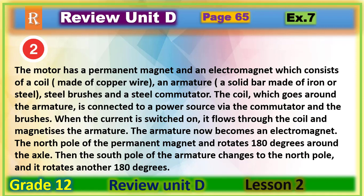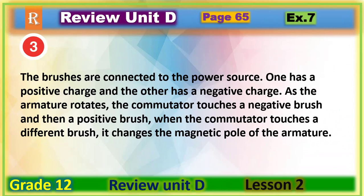The north pole of the permanent magnet attracts the south pole of the armature and it rotates 180 degrees around the axle. Then the south pole of the armature changes to the north pole and it rotates another 180 degrees. Step three: the brushes are connected to the power source — one has a positive charge and the other a negative charge. As the armature rotates, the commutator touches a negative brush then a positive brush, changing the magnetic pole of the armature.